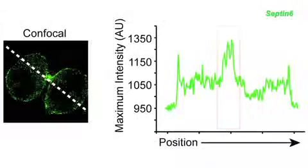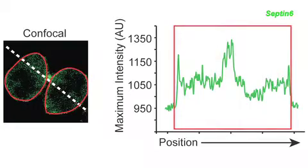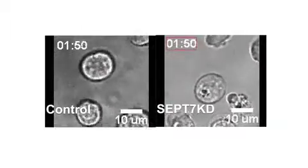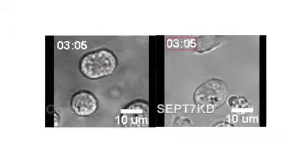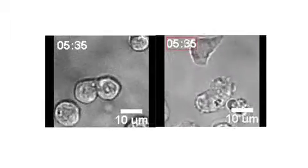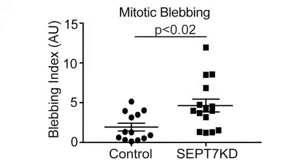Similarly, though septins are concentrated at the cleavage furrow of dividing T-cells, they can also be found all over the cell cortex. Mitotic cells lacking septins showed more blebbing of their polar membranes than wild-type T-cells did. Septins are therefore enriched at regions of cortical instability.